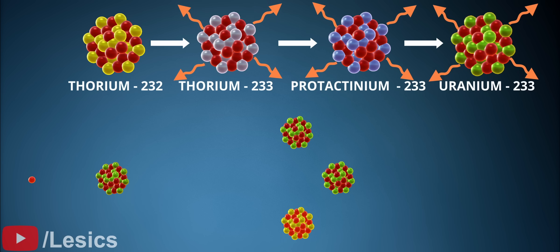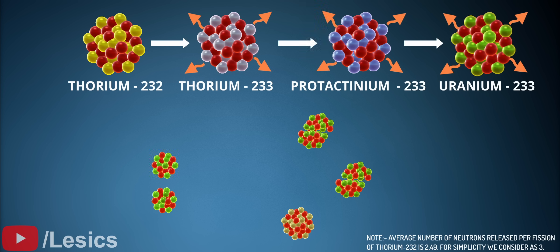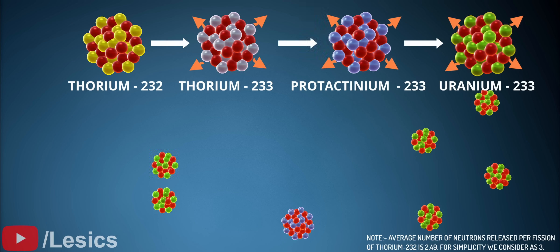Uranium-233 undergoes a similar chain reaction as uranium-235. In fact, the average number of neutrons released during fission of uranium-233 is more than the average number of neutrons released during fission of uranium-235.